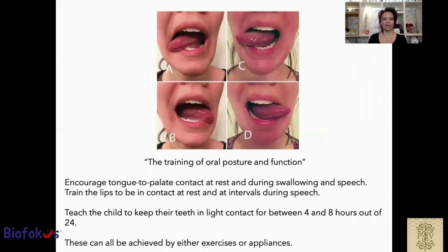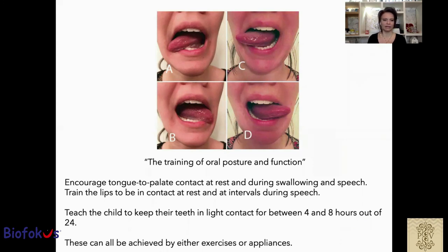The training of oral posture and function includes encouraging tongue-to-palate contact at rest, during swallowing and speech, training the lips to be in contact at rest during speech, and teaching the child to keep their teeth in light contact. This can be achieved either by exercises or by appliance.